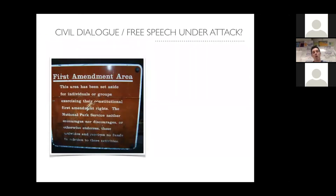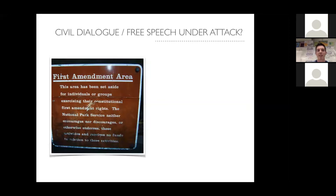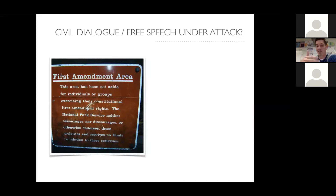There may be an environment now where civil conversation is too difficult to achieve and our ideas of free speech may be self-policed. For example, there's a picture I came across while hiking in Virginia: "This area has been set aside for individuals or groups exercising their constitutional First Amendment rights." When I show this picture to my classes, many times students say there's an implication that maybe you don't have this First Amendment right outside that area — why is this sign specifically marking an area for free speech?